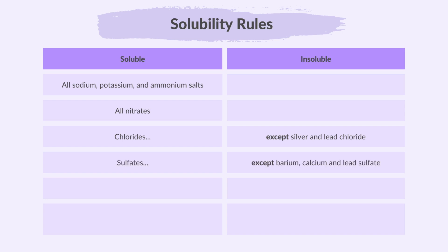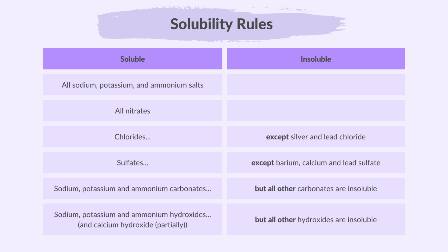Sulfates are soluble except barium sulfate, calcium sulfate, and lead sulfate. Sodium, potassium, and ammonium carbonates are soluble, but all other carbonates are insoluble. Sodium, potassium, and ammonium hydroxides are soluble. Calcium hydroxide is partially soluble, but all other hydroxides are insoluble.